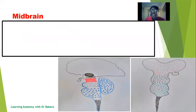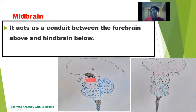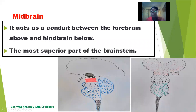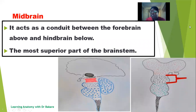The next region is the midbrain. The midbrain is like a conduit located between the forebrain and the hindbrain — a connecting stalk between the upper part and the lower part of the brain. It is actually the most superior part of the brain stem, as we will see when we discuss the brain stem later in this lecture. During development, the mesencephalon is the middle primary brain vesicle, located between the prosencephalon and the rhombencephalon, and as development proceeds it becomes the midbrain.